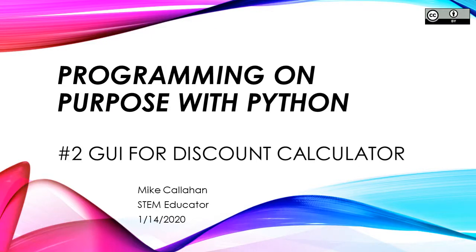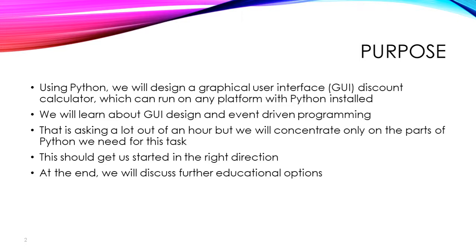Hi, my name is Mike Callahan. I'm a STEM educator, and welcome to Programming on Purpose with Python, number two. This is where we will develop a graphical user interface, or commonly called a GUI, for the discount calculator that we developed in the previous slides. Using Python, we are going to design a GUI discount calculator which will run on any platform with Python and a library called TKinterToy installed.